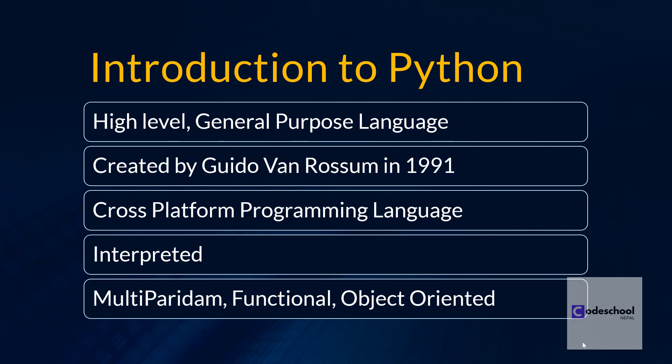Being cross-platform means we can run Python on different processor architectures — Linux, Windows, Mac OS X, and even Android. Python also supports inter-operation between multiple languages; for example, we can use Java libraries or .NET libraries using IronPython. Python is an interpreted programming language, meaning the Python interpreter reads the source code line by line at runtime. This also means you can try code snippets instantly. Python is also multi-paradigm — we can write programs in a procedural, object-oriented, or functional programming style.